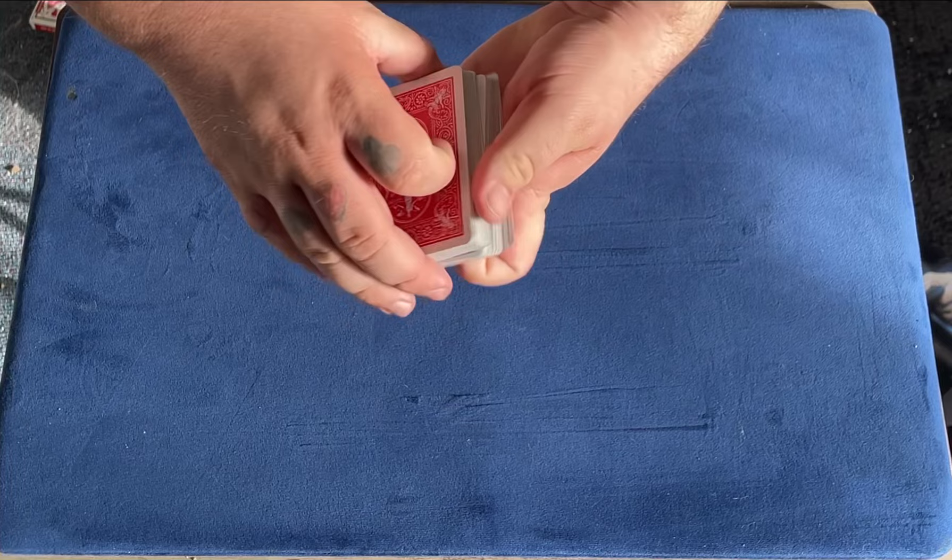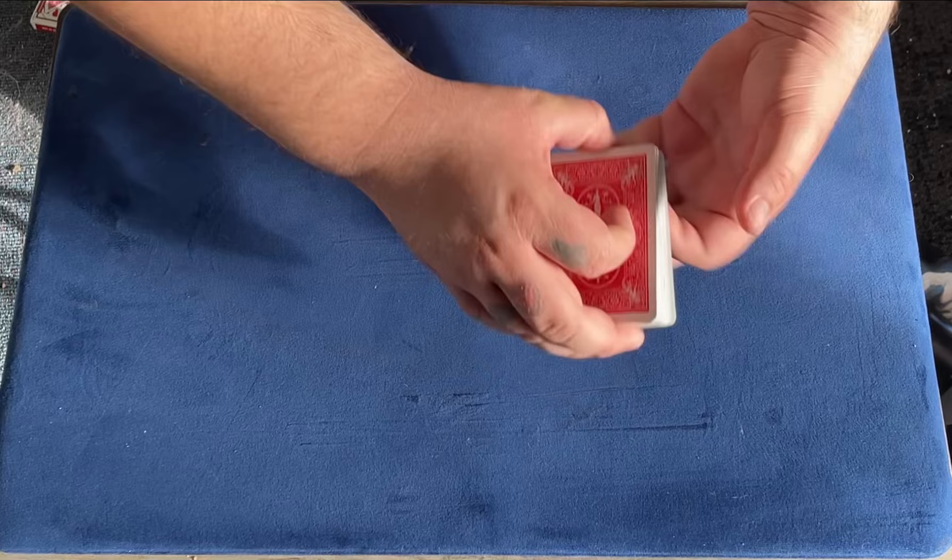We just wave, cast a shadow right over the deck, and we can get one card and one card only to turn face up, the five of clubs.